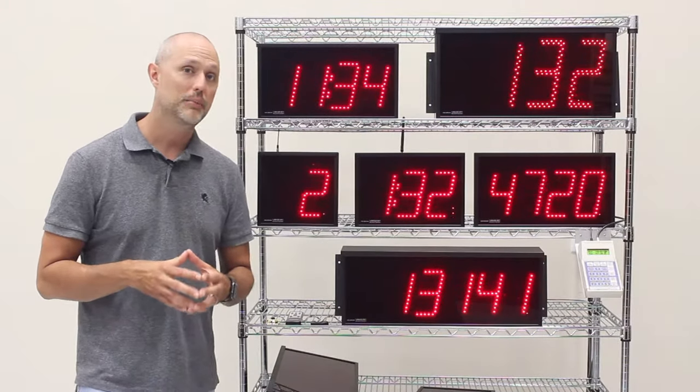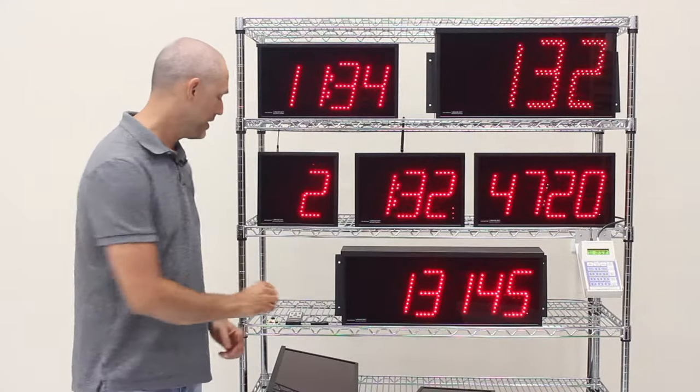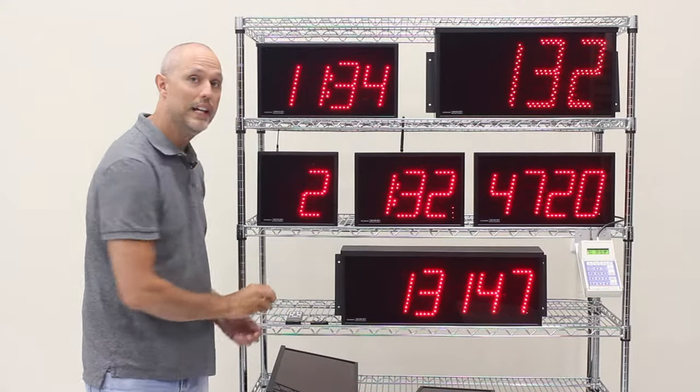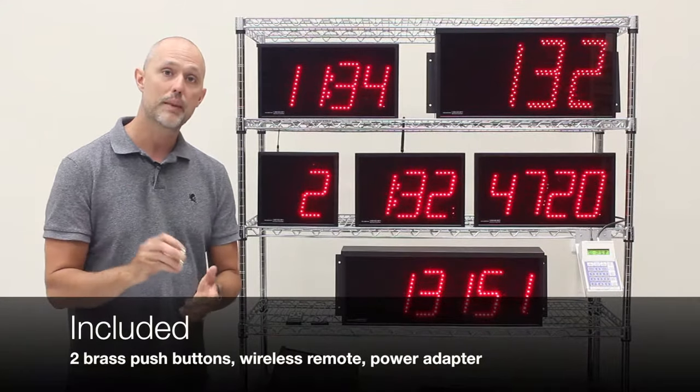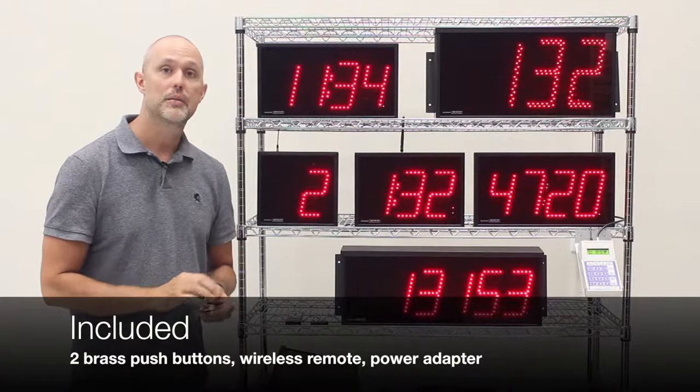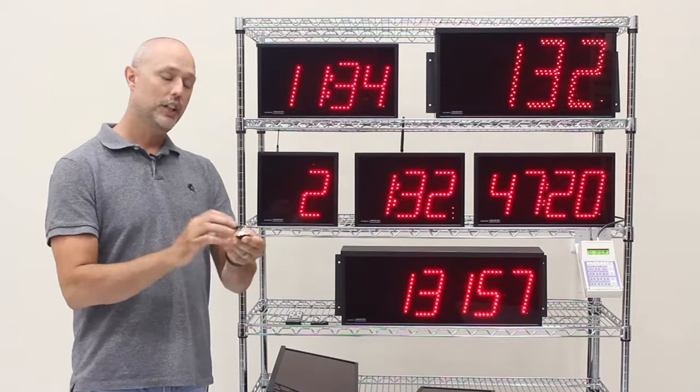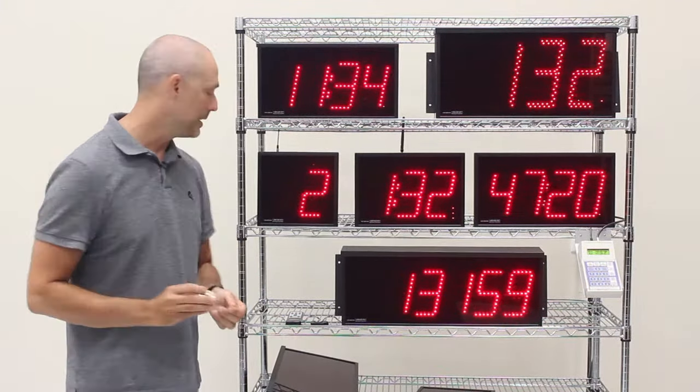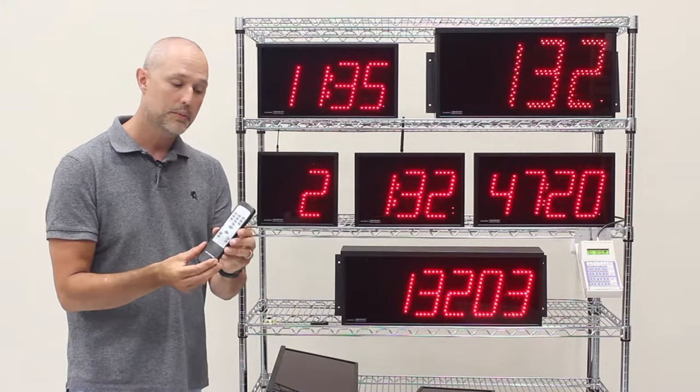So let's start by talking a little bit about the 6300 series in detail. Every 6300 display is going to come with two brass push buttons. Each push button has screws on the back. These can be wired to the back of the display. One can be wired to start, the other to stop, and you can control some of the functionality by programming the display with the included remote. Every display comes with a remote.